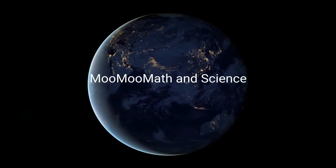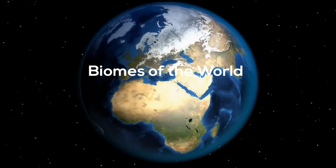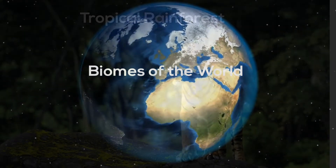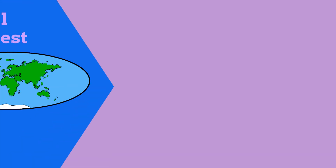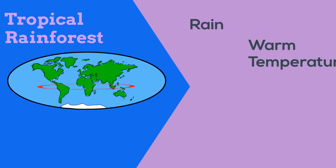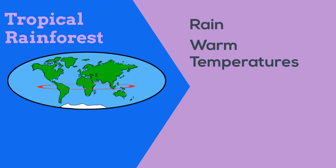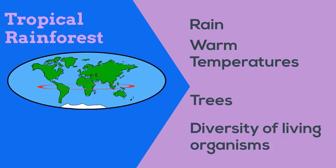Welcome to MooMooMath and Science. In this video, let's take a look at a tropical rainforest. Tropical rainforests are found around the equator. This biome is known for rainfall, warm temperatures year-round, trees, and a huge diversity of living organisms.